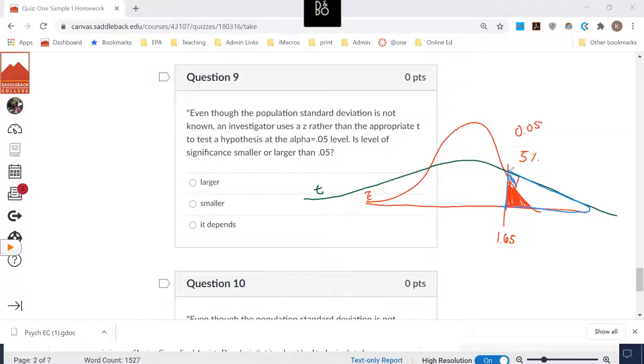The rejection region for the z distribution would be 5%. So this shaded red zone here is 5%. But you can see how this is much bigger than 5%. It's the blue plus the red.